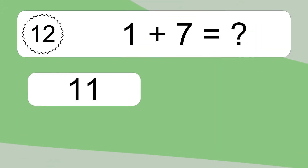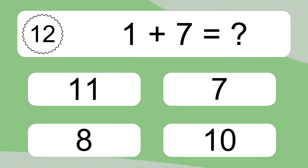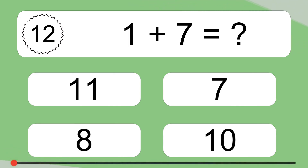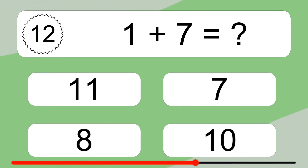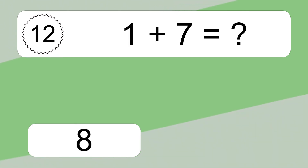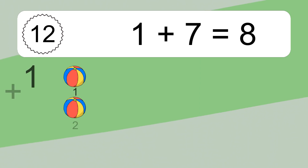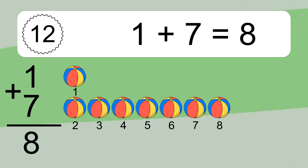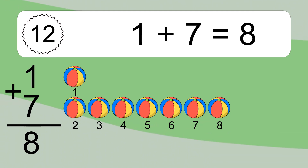1 plus 7 equals what? 1 plus 7 equals 8. Let's count it: 1, 2, 3, 4, 5, 6, 7, 8.